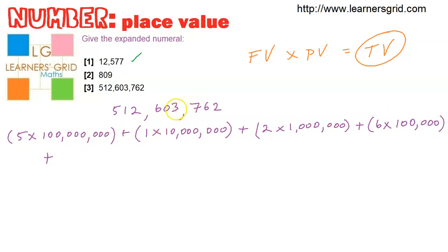So if we get the zero, there's nothing there. Plus three times, what's the place value there? Thousands. Plus we're up to the seven. So seven, what's its place value? It's the hundreds.